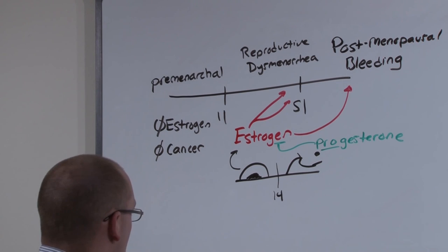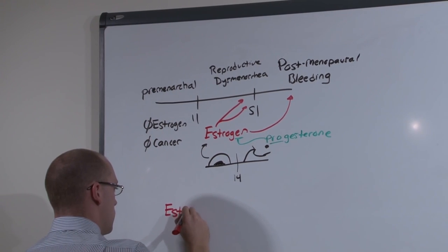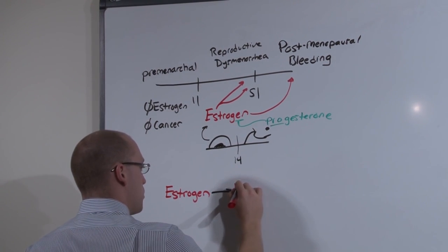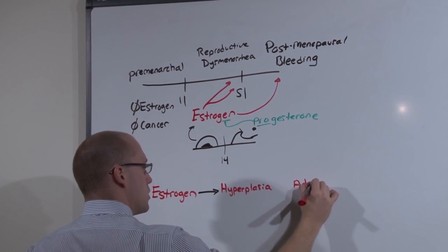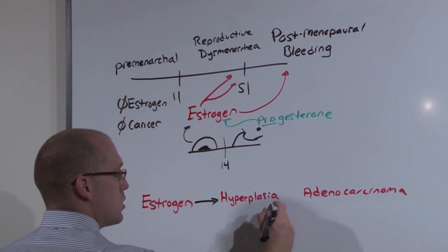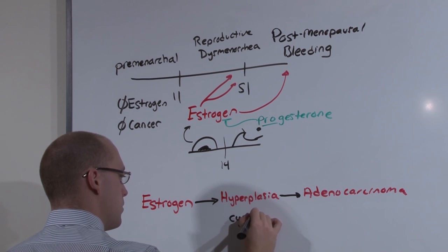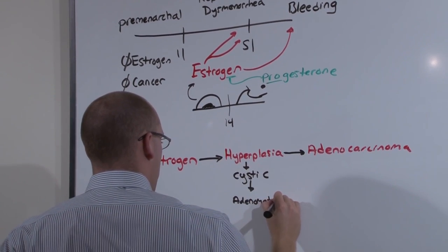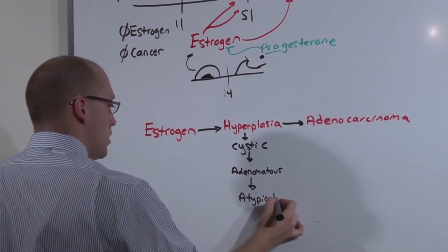Let's go through the pathogenesis following our model. Estrogen exposure then causes pre-cancer, and the pre-cancer is hyperplasia. It eventually will become adenocarcinoma. But to get from hyperplasia to adenocarcinoma, it passes through several different phases: cystic, adenomatous, and eventually atypical, which then leads to adenocarcinoma.